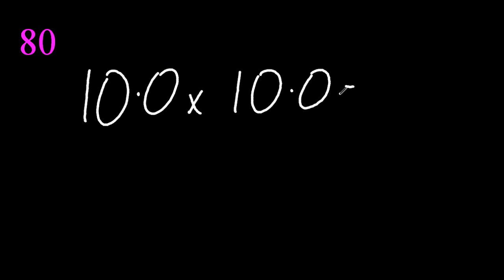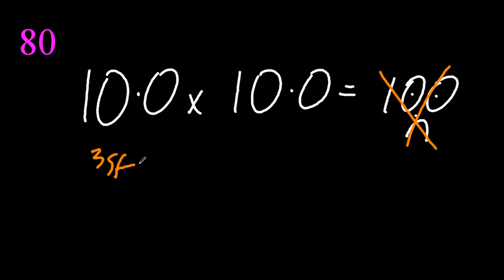10 times 10 is 100, isn't it? No, it's not. Not in IB, it isn't. 3 sig figs, 3 sig figs, multiply, gives you 3 sig figs. 100 point.